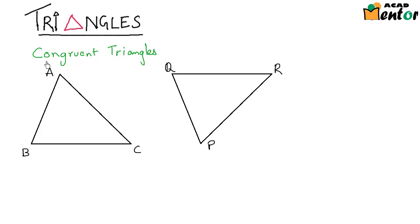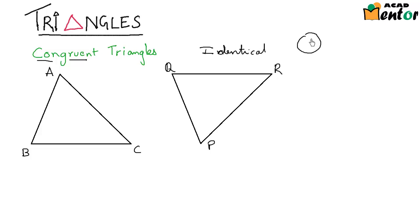The word congruent means identical. That means if there is a circle with radius of 1 centimeter and there is another circle with the same radius of 1 centimeter, these two circles are absolutely identical to each other.